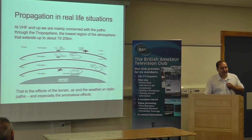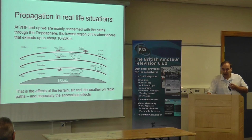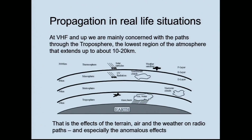Propagation in real life situations. At VHF and above, we're mostly concerned with paths that go through the troposphere — the lower layer of the atmosphere, which extends up to about 10 to 20 kilometres above us. Also the effects of terrain, hills, vegetation, trees, and the air. That bit of atmosphere is particularly strongly influenced by the weather — we have rain, wind, water vapor, clouds. All of these things impact the propagation, and that is what causes the anomalous effects.